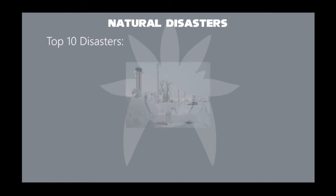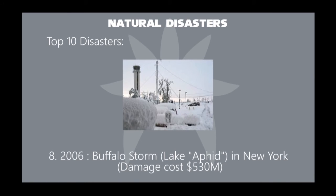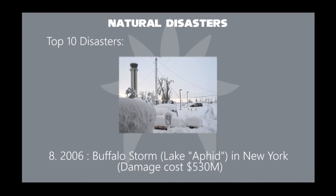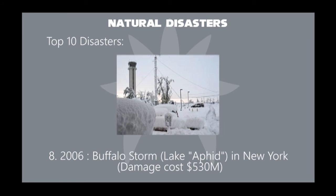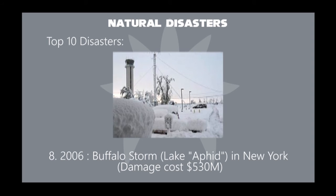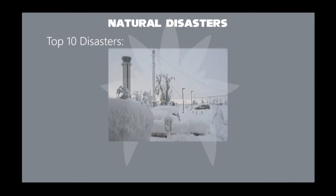In 2006, the Buffalo storm, or Lake Storm Aphid, was an unusual early-season lake-effect snowstorm that hit the Buffalo, New York area and other surrounding areas of the United States and Canada, from the afternoon of Thursday, October 12 through the morning of Friday, October 13. Its damage cost was about $530 million.